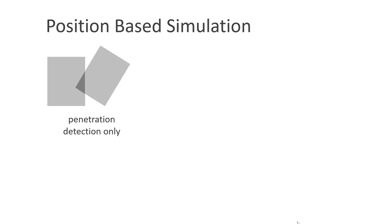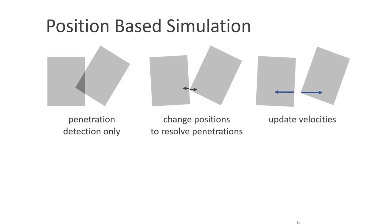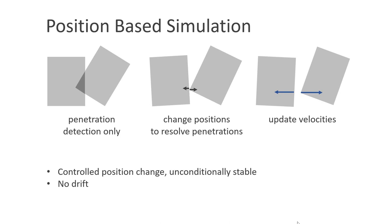Now let's have a look at the position-based dynamics approach. Here we also just detect the penetrations, then we directly change the positions of the objects to remove the overlap. Finally, to get a dynamic system, we need to update the velocities accordingly. We have a controlled position change, which yields an unconditionally stable simulation, and we don't have the drift problem of impulse-based approaches.